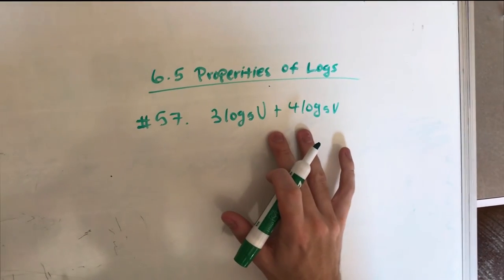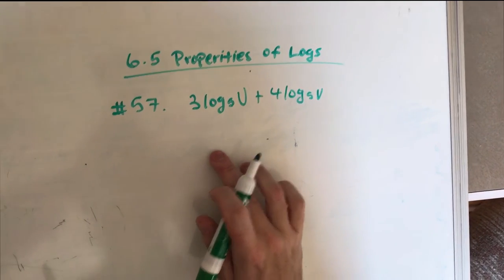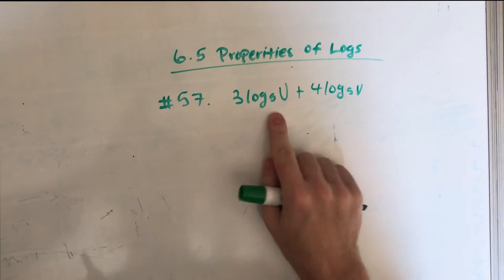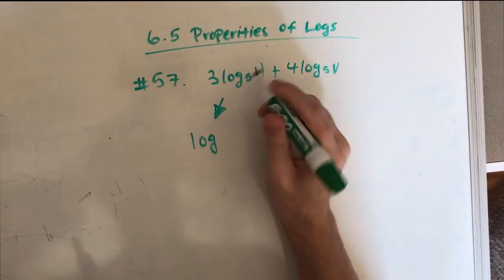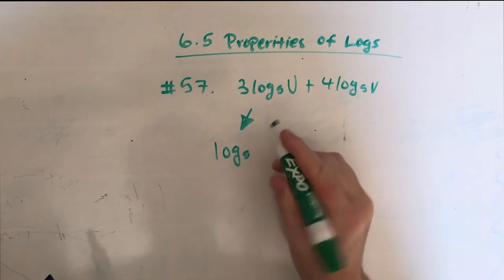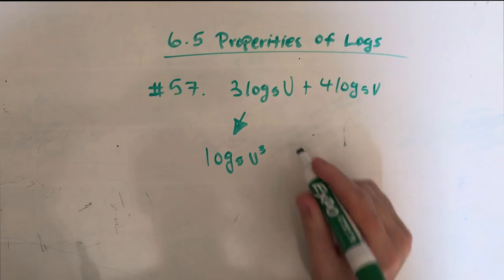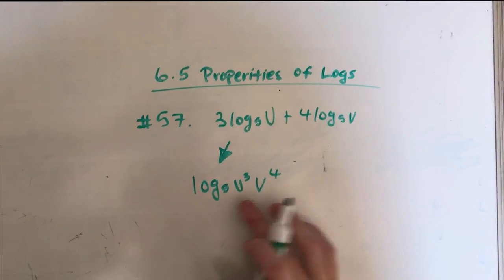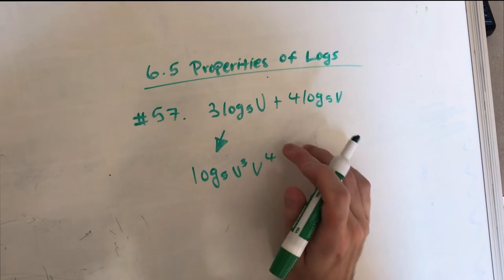We're trying to make this a single logarithm rather than two. So we're keeping log base 5 in front because this is what's constant in both, and we're maneuvering around the coefficients. We come down here, keep the same base as mentioned, and we make the coefficient 3 the exponent of u, and the coefficient 4 the exponent of v. So the answer is log base 5 of u to the 3rd, plus log base 5 of v to the 4th. It makes a lot of sense — we keep our log 5 because that's constant, but we switch the exponents around.